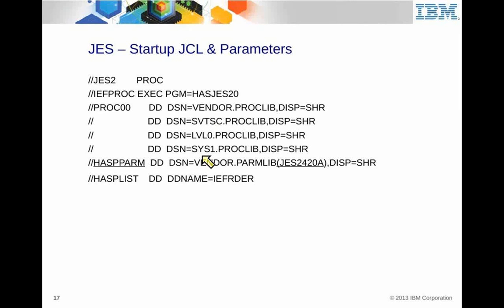JES also has a whole set of parameters. When this program executes, it looks for a DD name called HASPPARM. Inside HASPPARM are the initialization and tuning parameters for JES that control the global behavior of the JES environment. You could put those parameters anywhere — you just have to tell the proc. So instead of executing a program, you can execute a proc, and JES uses HASPPARM to find its configuration.